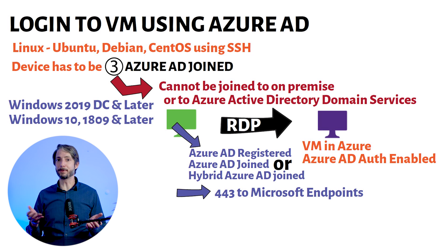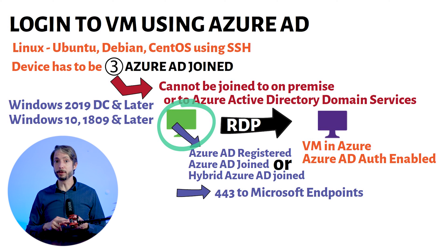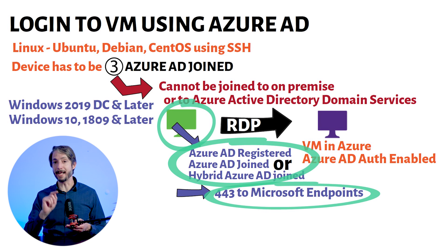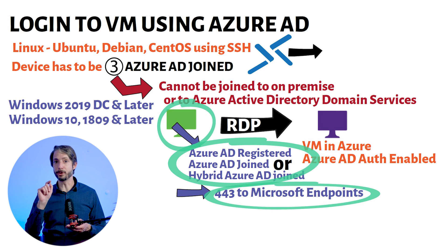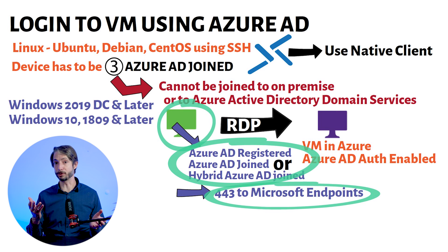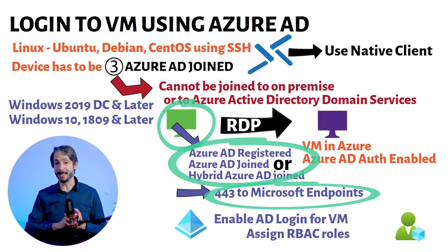Let's put the high-level steps in perspective before the demo. You need a destination VM — Windows 10, Windows 2019 Datacenter or later — that you want to connect to. You ensure the VM has outbound 443 access to the Microsoft endpoints. You make sure the connecting source client is at least registered in Azure AD. Note that Azure Bastion is not supported for login using AD authentication through the portal — you have to use the native RDP client. In Azure, you enable Azure AD login for the VM and set the RBAC rules on the VM to control who can access it.